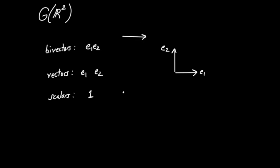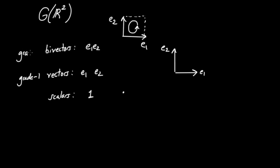The bivector E1E2 is the parallelogram formed by considering E1 and E2 as the sides, completing that parallelogram and attaching an orientation to it. Vectors are called grade 1 objects since they involve one vector at a time. Bivectors are grade 2 objects since they involve two vectors at a time. Scalars are grade 0 objects since they involve no vectors. So within GR2 we have three grades: 0, 1, and 2. This abstract vector space has four dimensions — one scalar, two vectors, and one bivector as basis elements.